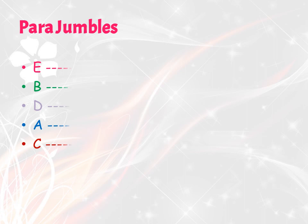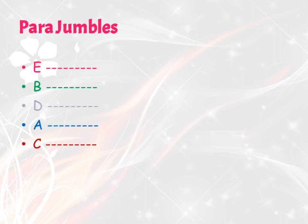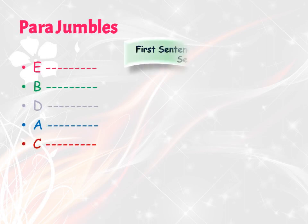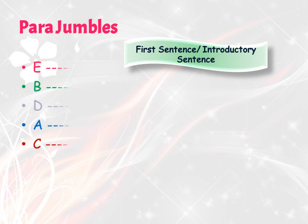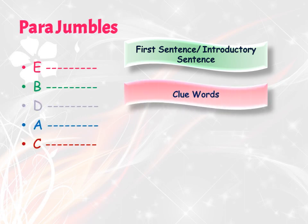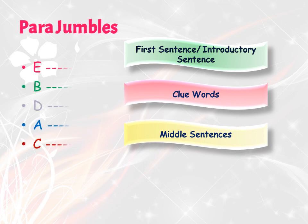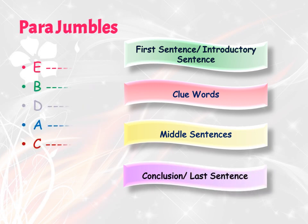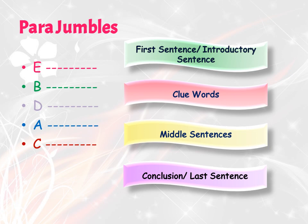The next topic is para jumbles. Here you will be given a paragraph in which the sentences are jumbled or not in order, and you are supposed to arrange them in a logical or meaningful way. For this, you should know how to identify the clue words, how to identify the introductory sentence, the middle sentences, and how to detect the last sentence.